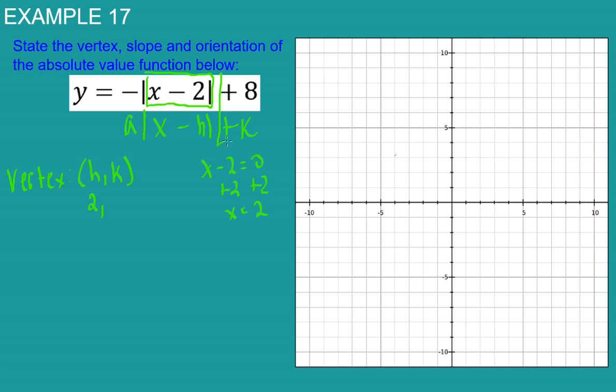And our K value is simply this number on the outside. It's positive, so it's positive 8. So there's our vertex.